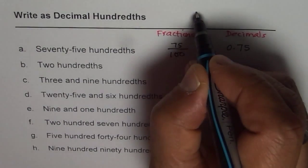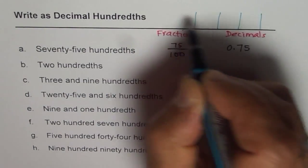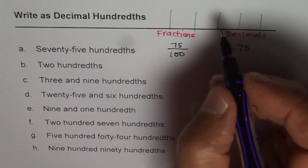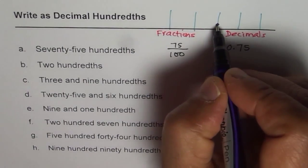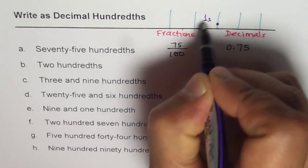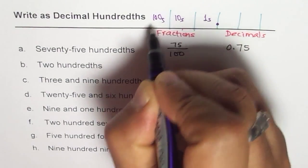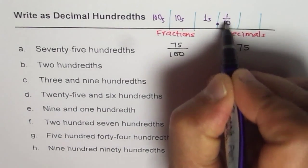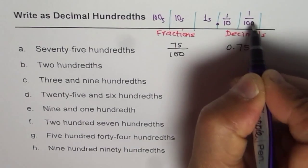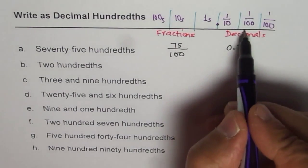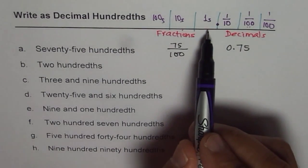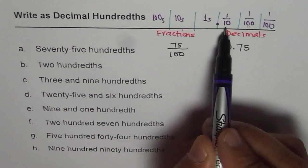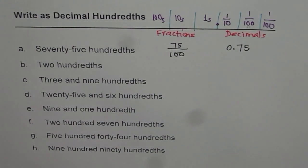Let me explain the place value chart. In the place value chart, we have a decimal point. Since we are dealing with hundredths, to the left of the decimal we have ones, tens, and hundreds. To the right we have tenths — one out of ten — then hundredths — one out of a hundred — then thousandths. We are concentrating on the second position, the hundredths, so 0.75 is written with 7 in tenths and 5 in hundredths.